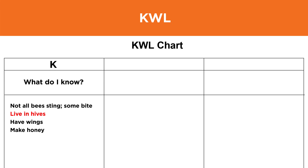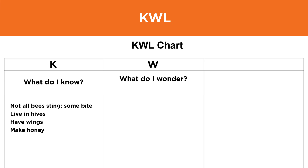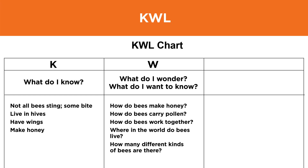You also know that bees live in hives, have wings, and make honey. W stands for Wonder or Want, as in: what do I wonder, or what do I want to know? For example, you may want to know how bees make honey, how bees work together, and just what kinds of bees there are.